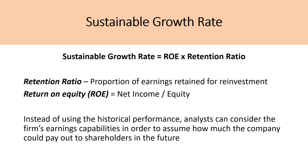Moving on to the sustainable growth rate: to calculate it, we multiply the company's return on equity times its retention ratio. The retention ratio is the proportion of earnings retained for reinvestment — so if I pay out 60% of my earnings and keep 40%, my retention ratio would be 0.4. For return on equity, it's simply dividing the company's net income by its equity.